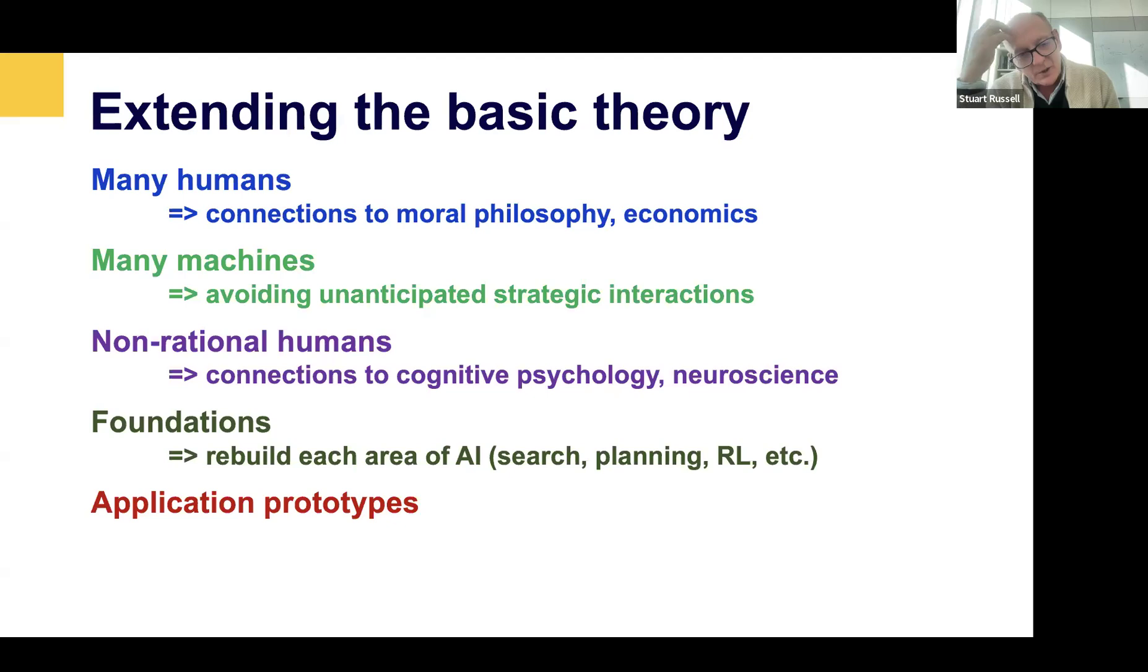Since we're throwing out the standard model, and all of the algorithms that we have in AI are based on the standard model, we're going to have to rebuild all the different branches of AI research on this new, broader foundation. The standard model is actually a very minuscule special case. And that's important because it turns out that there are entire qualitative classes of behavior, such as asking permission that cannot be exhibited by systems in the standard model.